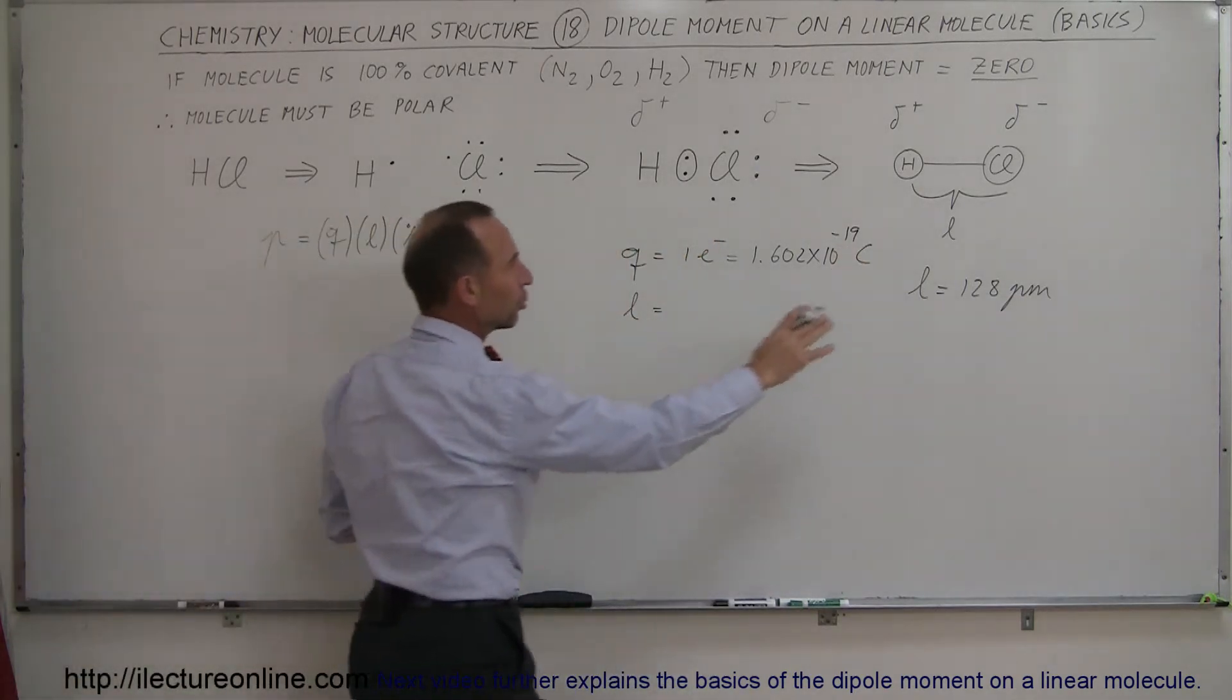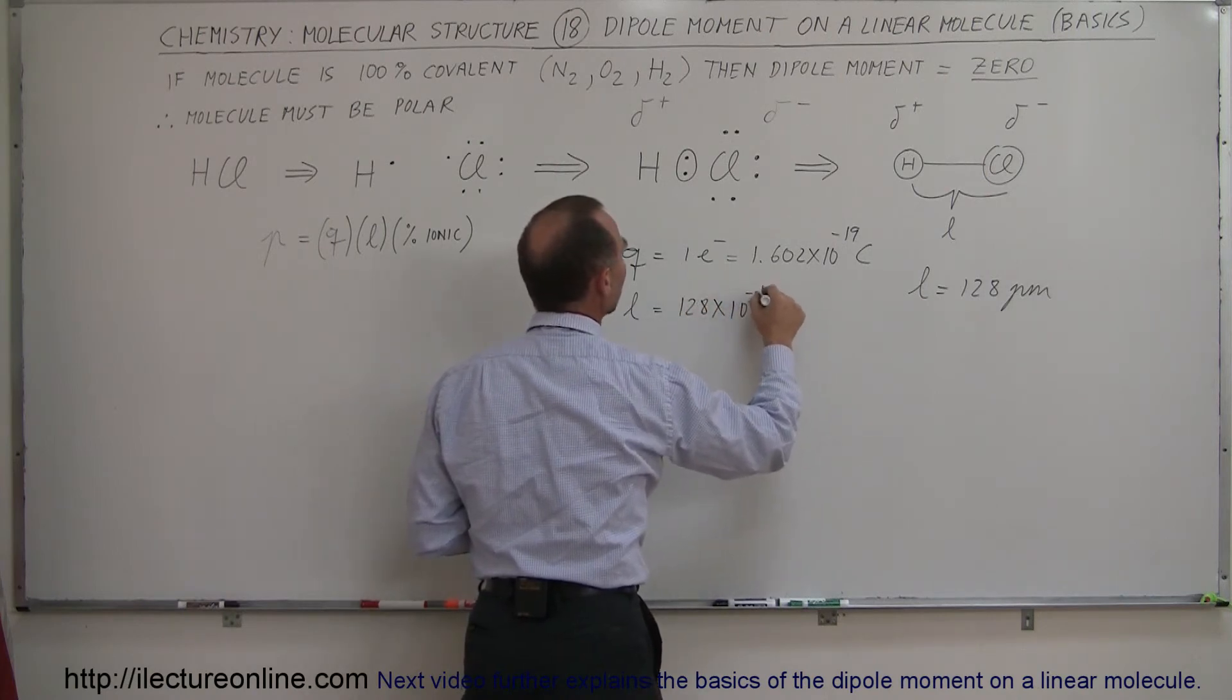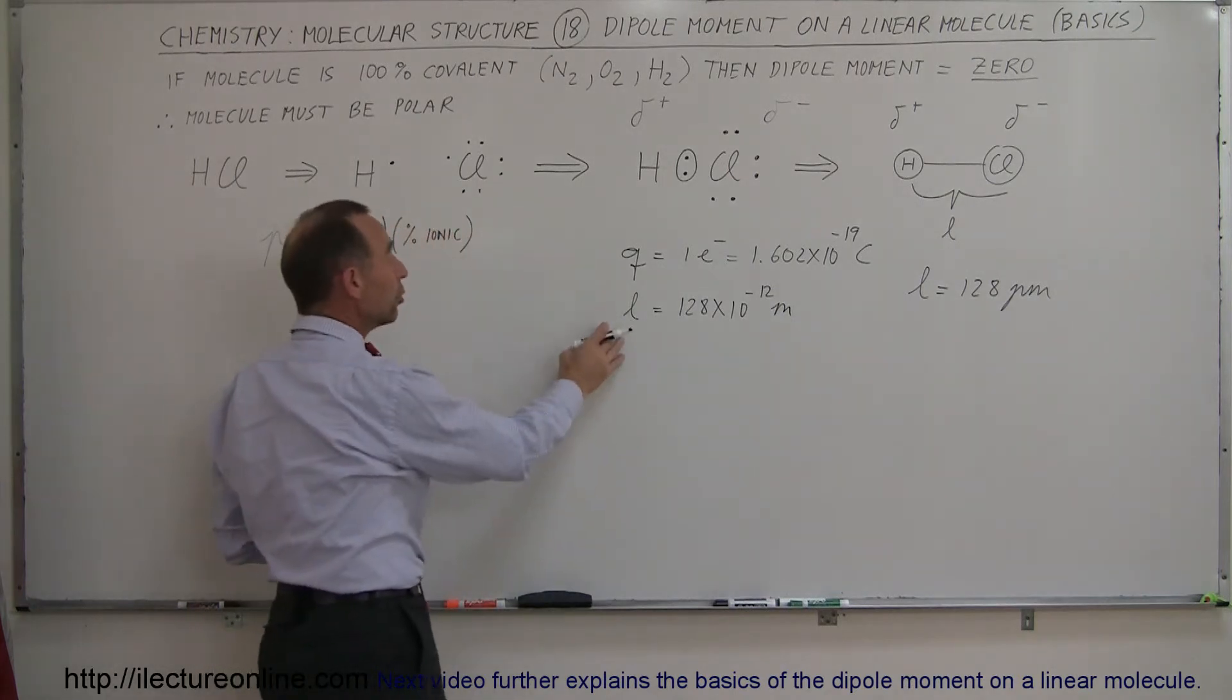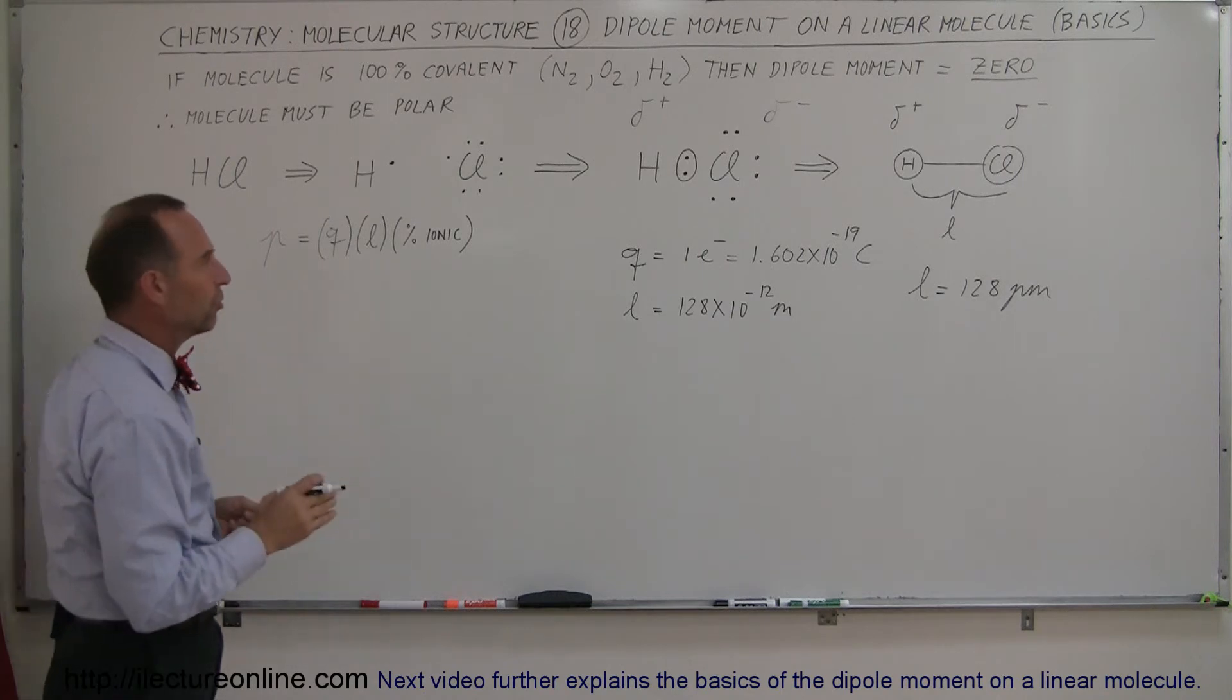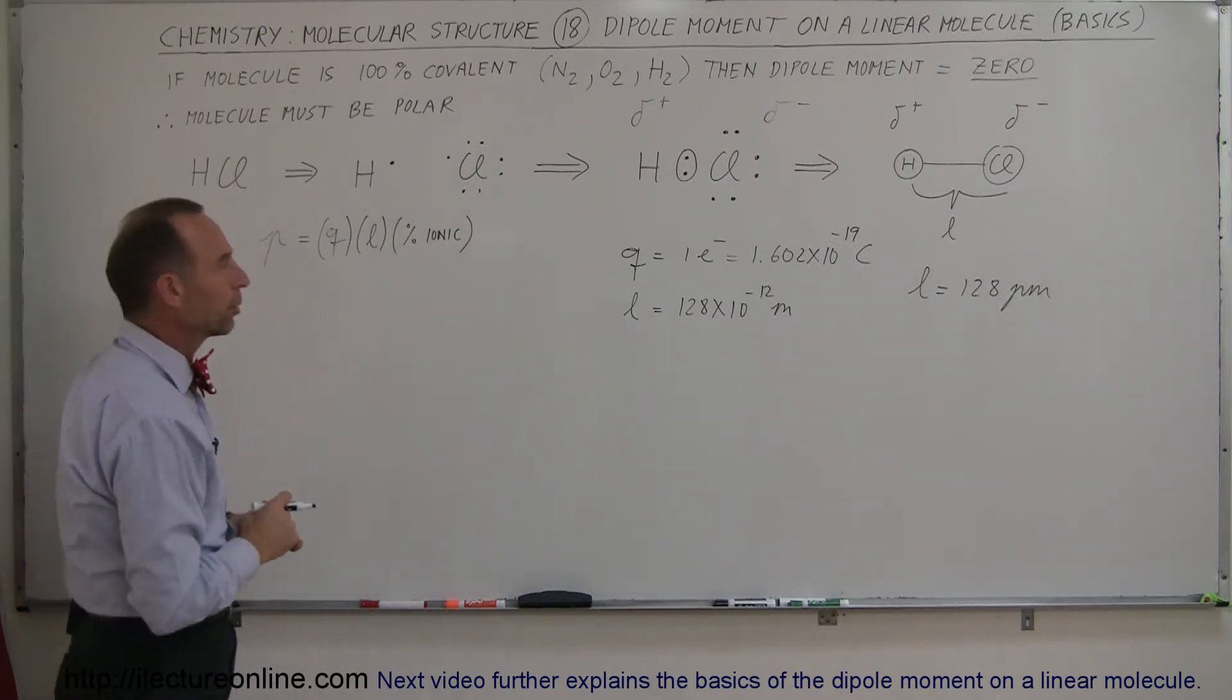The length, bond length, 128 picometers, that means 128 times 10 to the minus 12 meters. So normally, the dipole moment would be Q times L. It would simply be the product of those two numbers. But since it's not 100% arrangement, we need to find out the percent ionic that that molecule is.